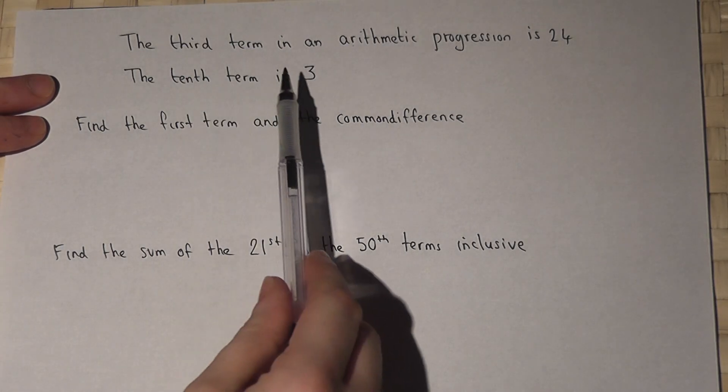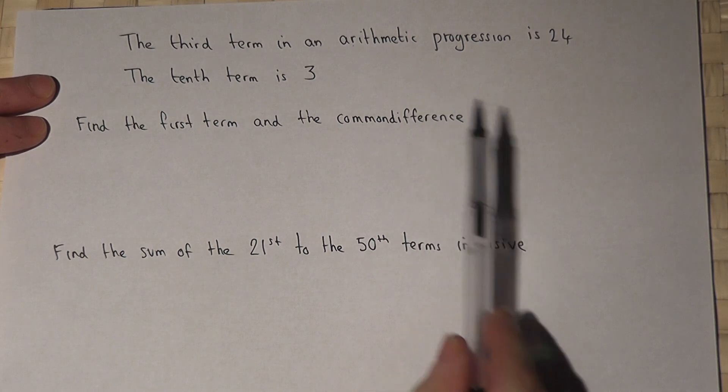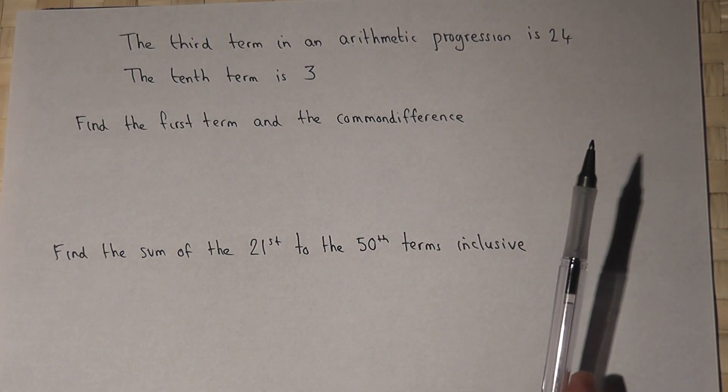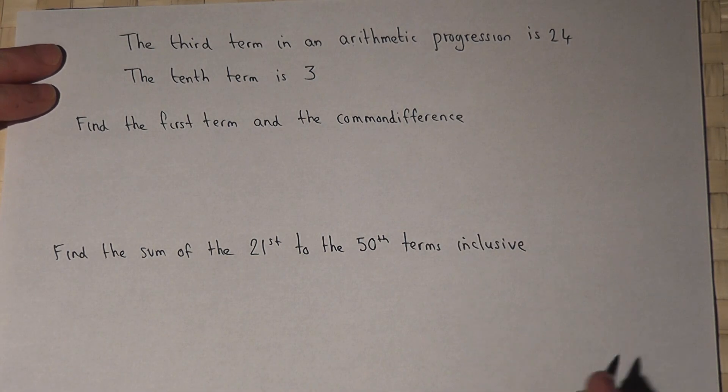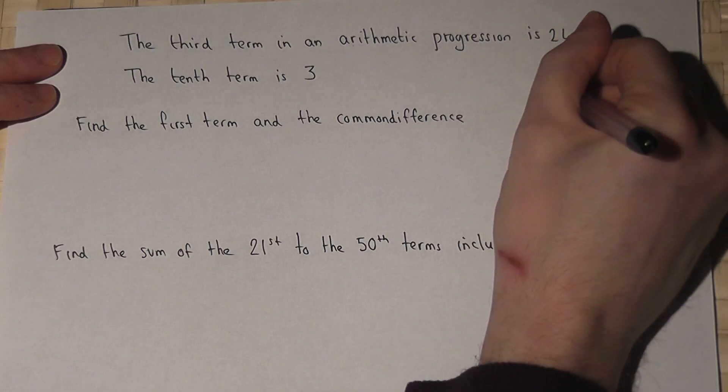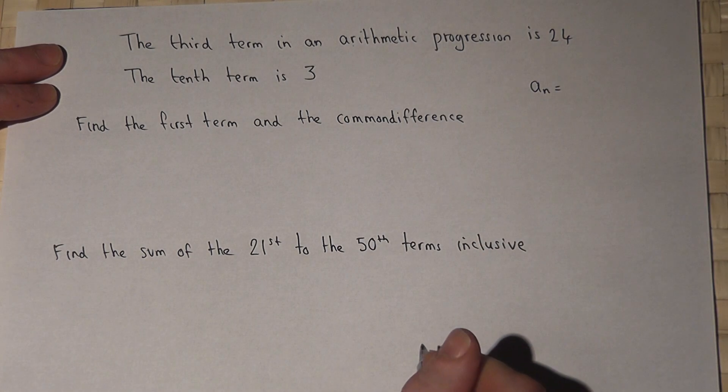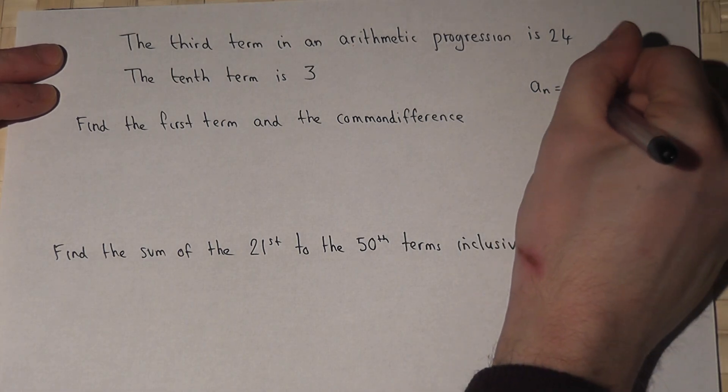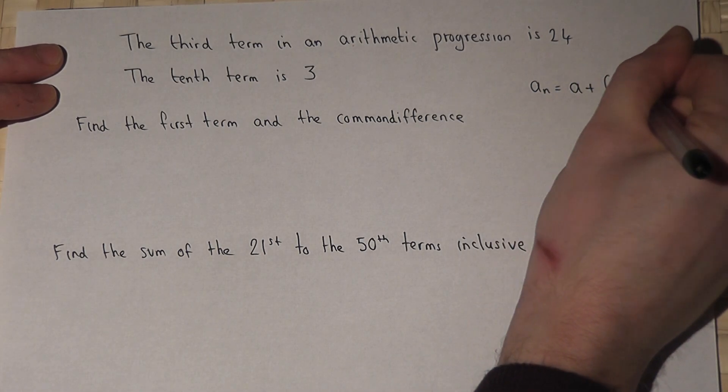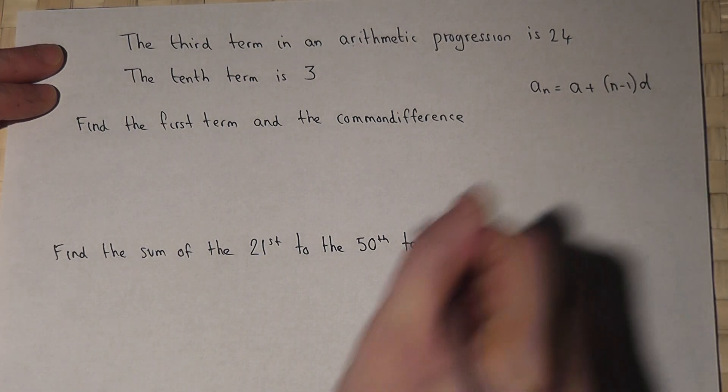We're told that the third term of an arithmetic progression is 24 and the tenth term is 3. Now the general formula or equation for an nth term of an arithmetic progression or sequence is a_n equals a plus n minus 1 times d.